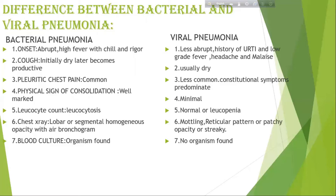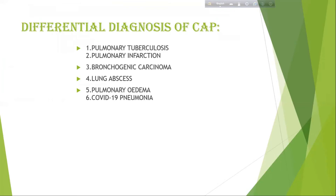Chest X-ray in bacterial pneumonia shows lobar or segmental homogeneous opacity with air bronchogram. In viral pneumonia there may be mottling, reticular pattern, or patchy opacity. No organism is found in viral pneumonia. Differential diagnosis of community-acquired pneumonia includes: pulmonary tuberculosis, pulmonary infarction, bronchogenic carcinoma, lung abscess, pulmonary edema, and COVID-19 pneumonia.